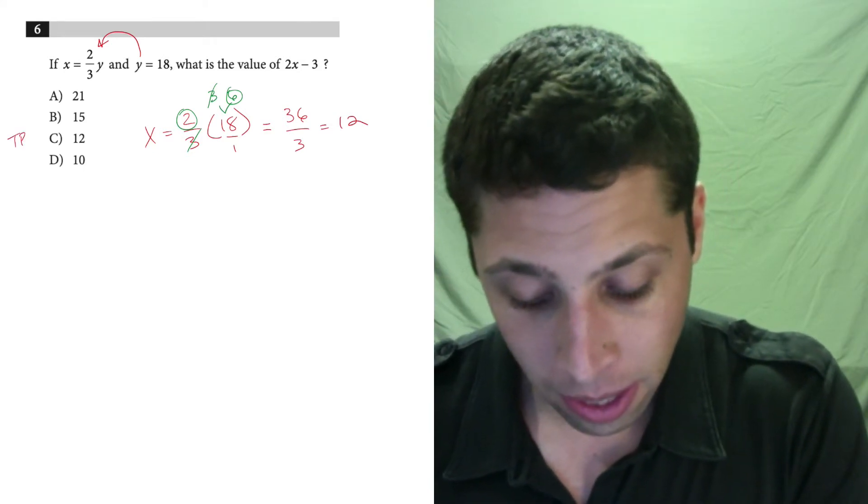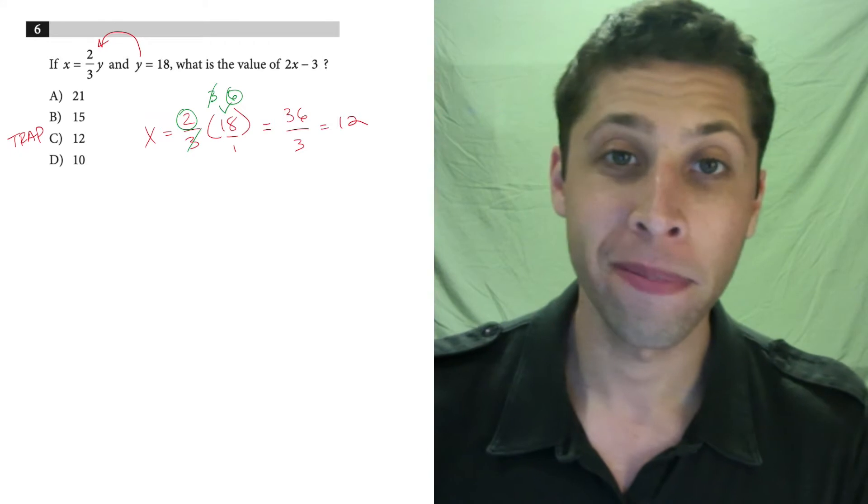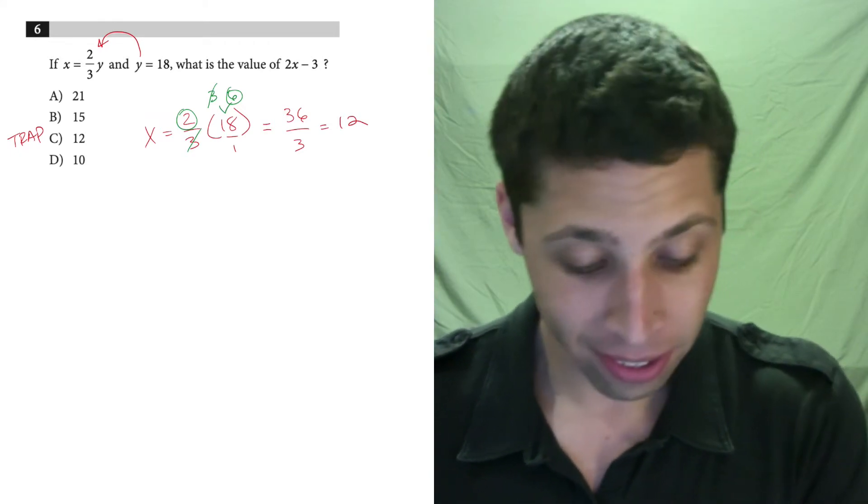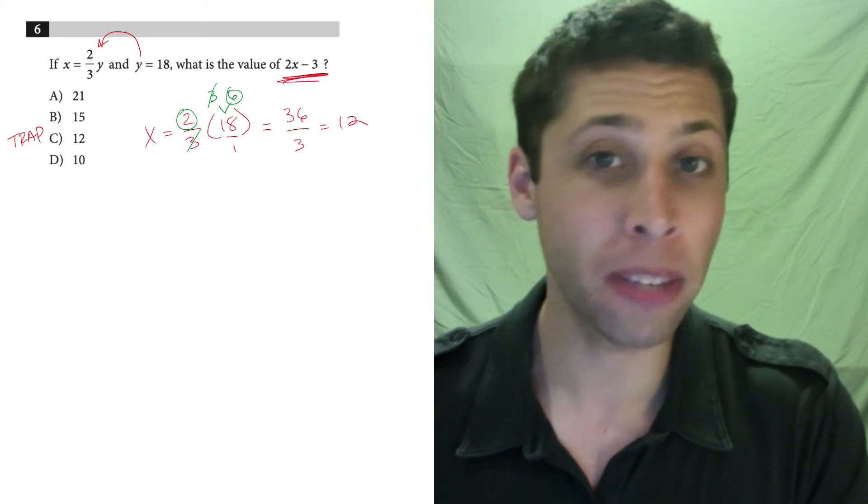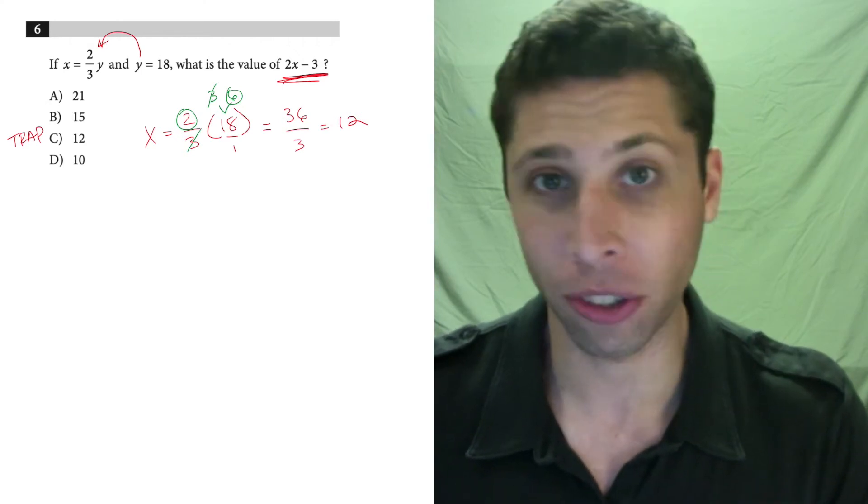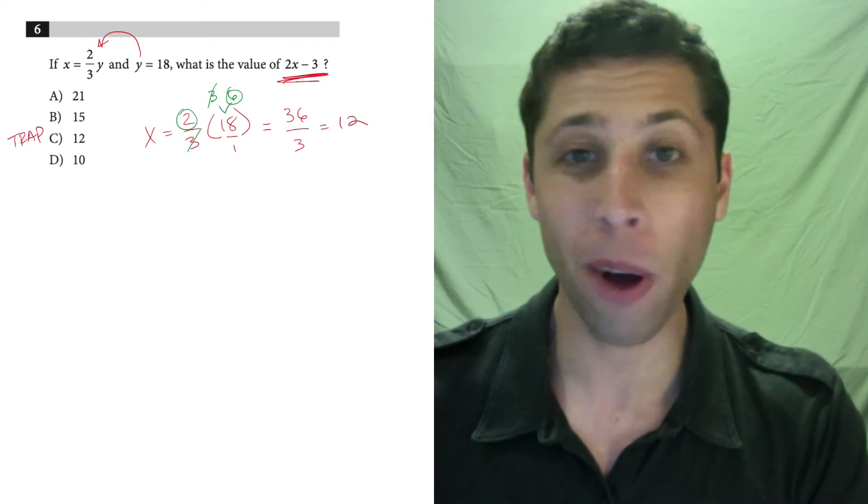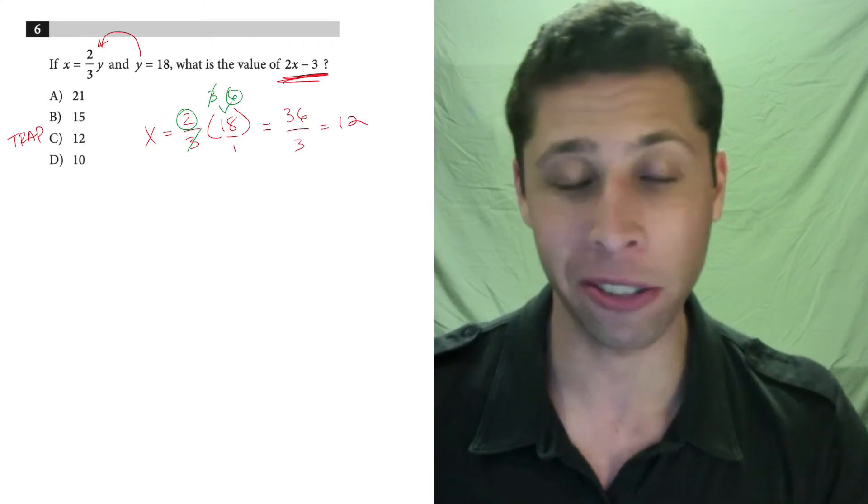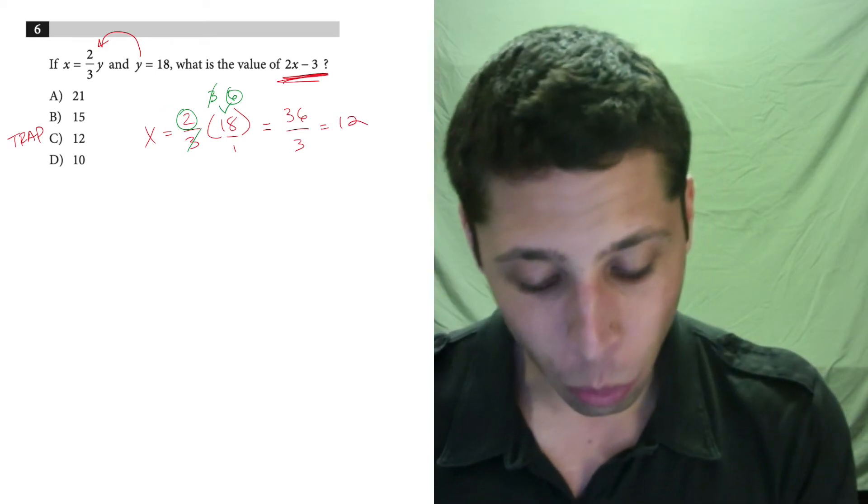Now, that's choice C, but that's a trap. That's not what they want. They didn't want x. This is why showing your work is sometimes just about underlining the question, making sure you give them what they want, not what you think the answer is going to be. We need to do this one extra step.